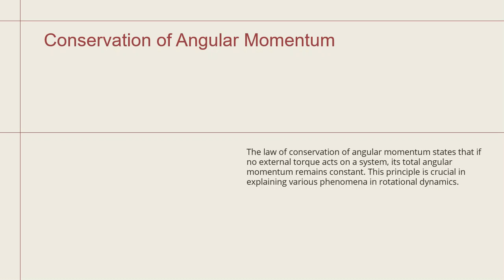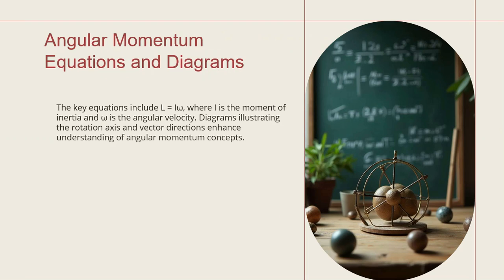Angular momentum explains various phenomena in rotational dynamics. How to write the equation for angular momentum? Angular momentum L equals I omega, where I is the moment of inertia and omega is angular velocity. Most important, this repeats many times in PGTRB examinations. The diagram represents rotation axis and vector direction for understanding angular momentum concepts.